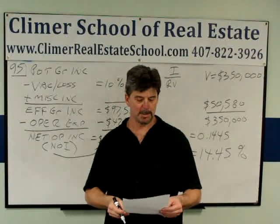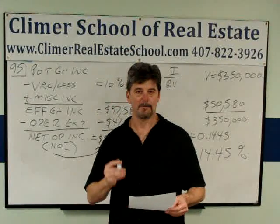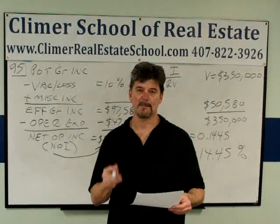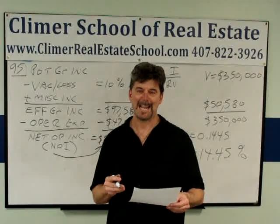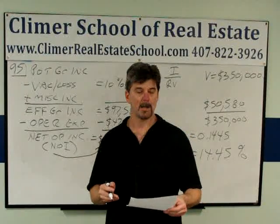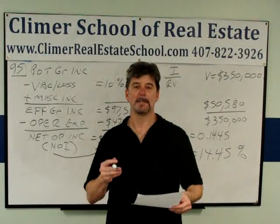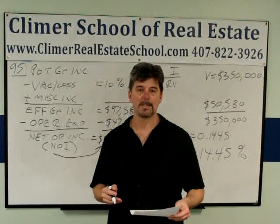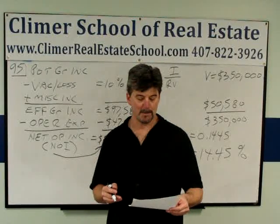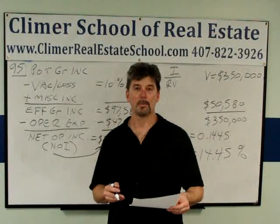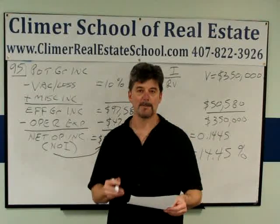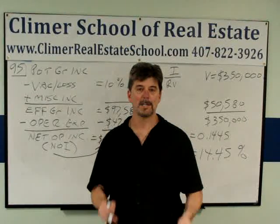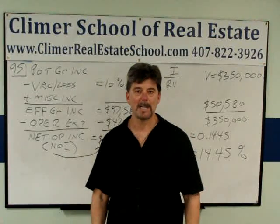An income producing property has an effective gross income of $97,580. Vacancy losses are expected to be 10%. Expenses are $47,000. If the price of the property is $350,000, what is the capitalization rate?